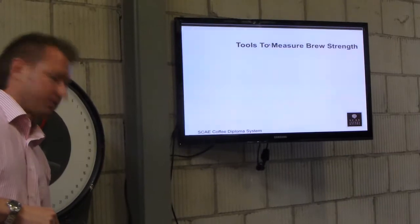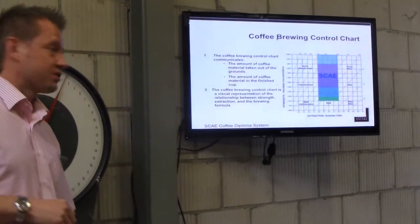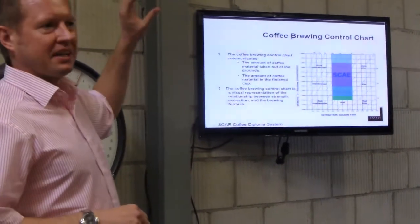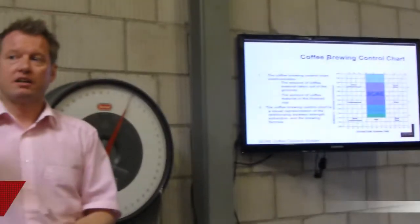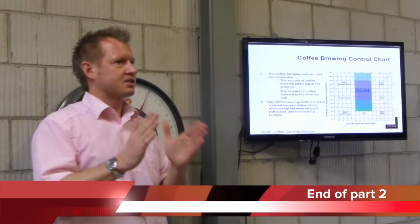Could you apply this chart to espresso as well? Yes. You use the exact same chart for espresso but you're 9 to 11 percent strength. So your strength reading is higher, that's all. But you're still 18 to 22 percent.